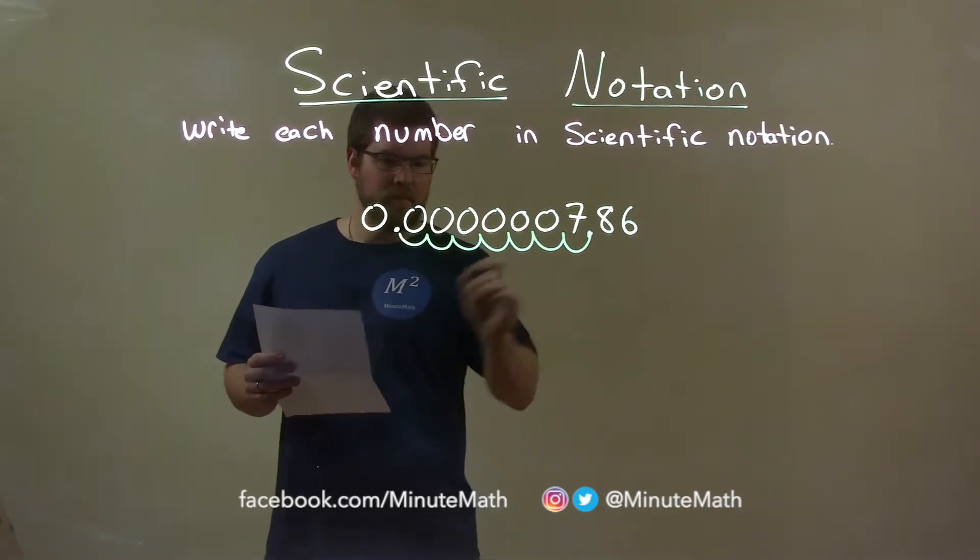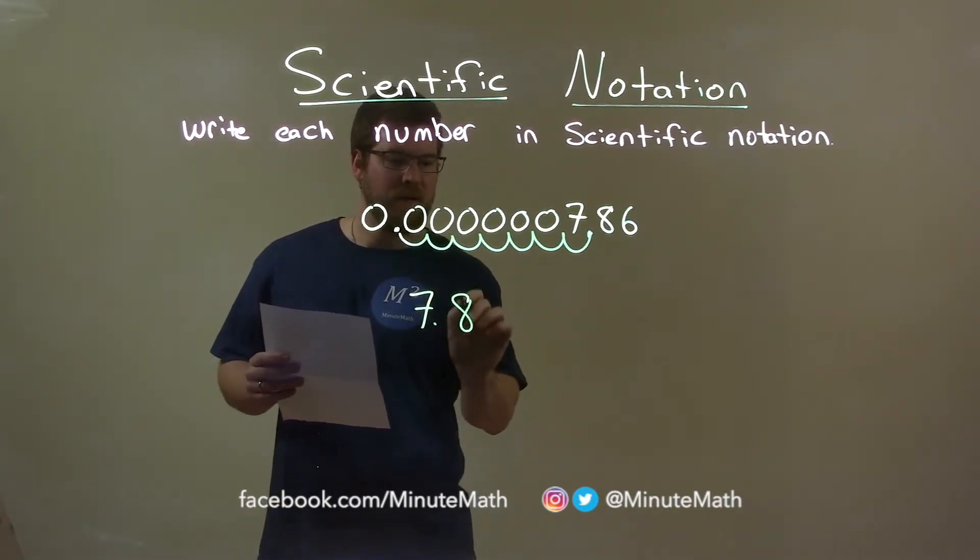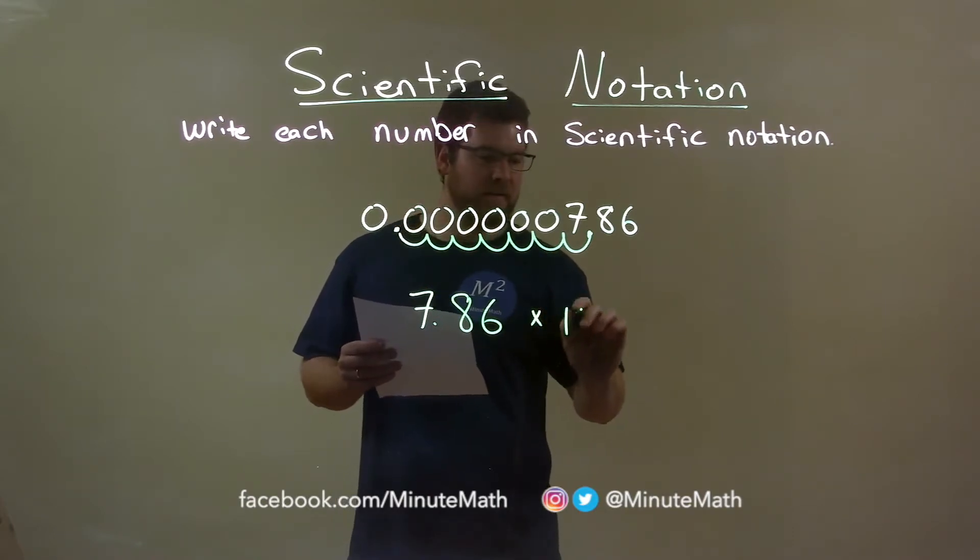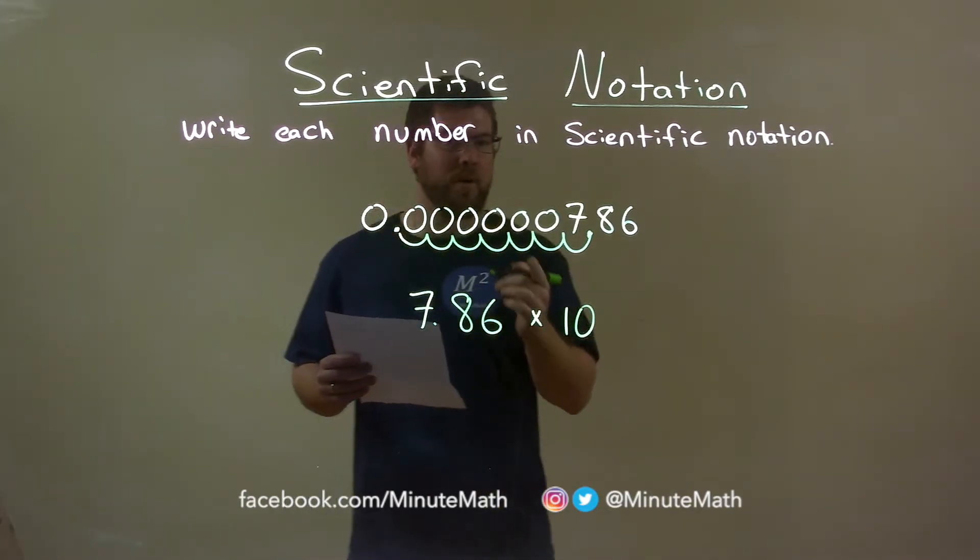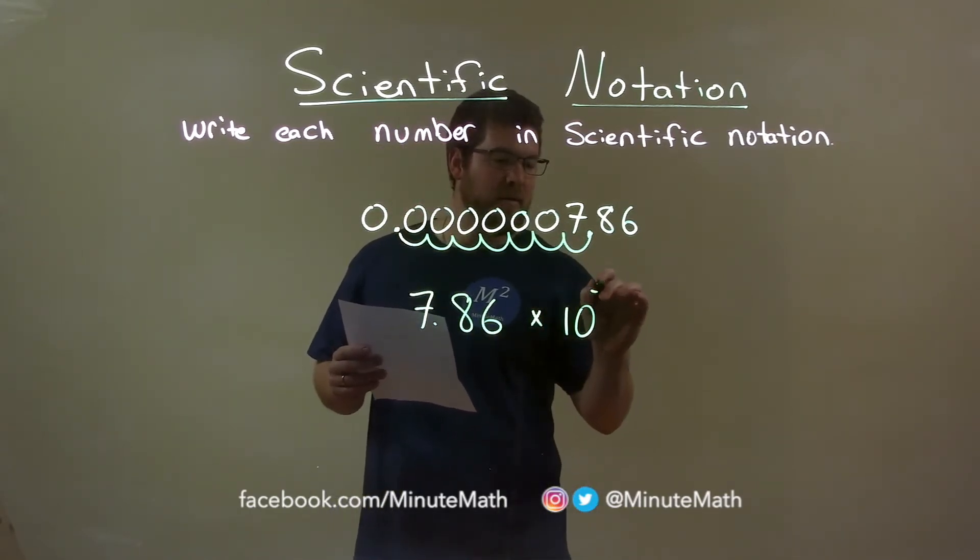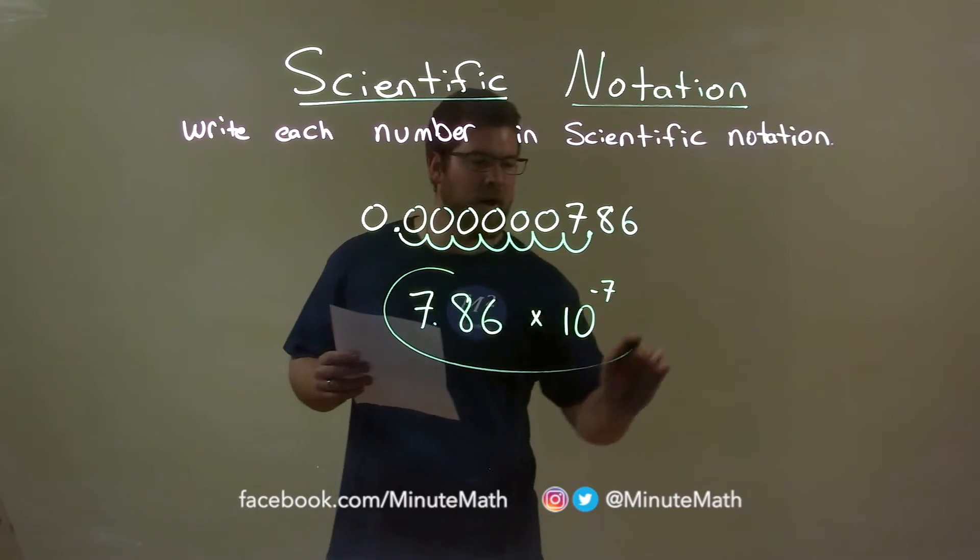So now we have 7.86, and that's going to be times 10. And I said it was 7 decimal points to the right, so that's the negative 7th power. And there we have our final answer, 7.86 times 10 to the negative 7th power.